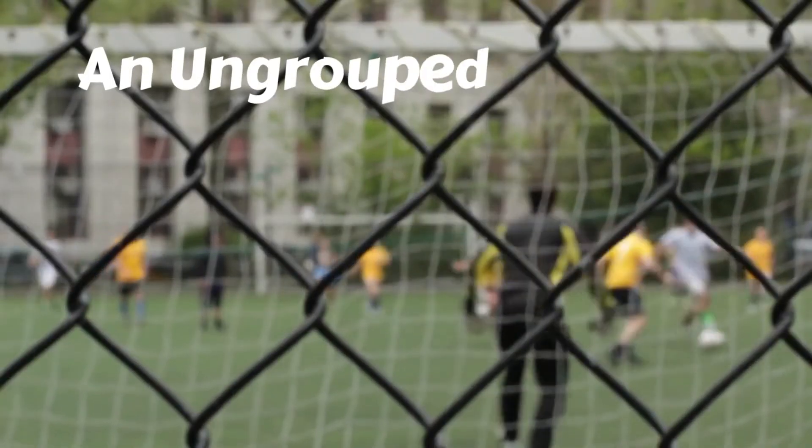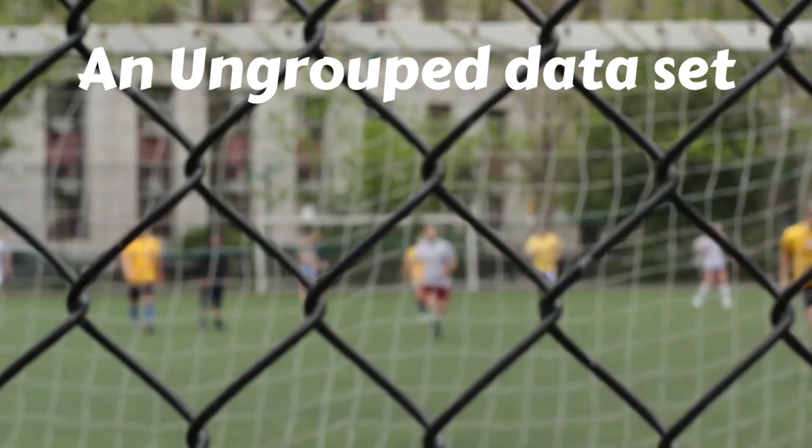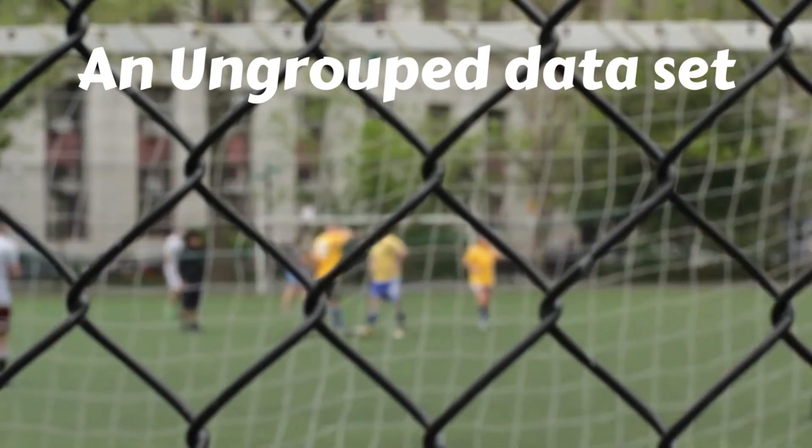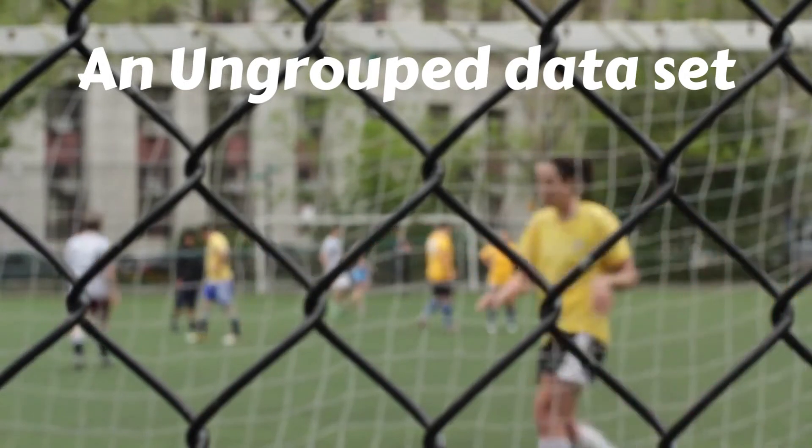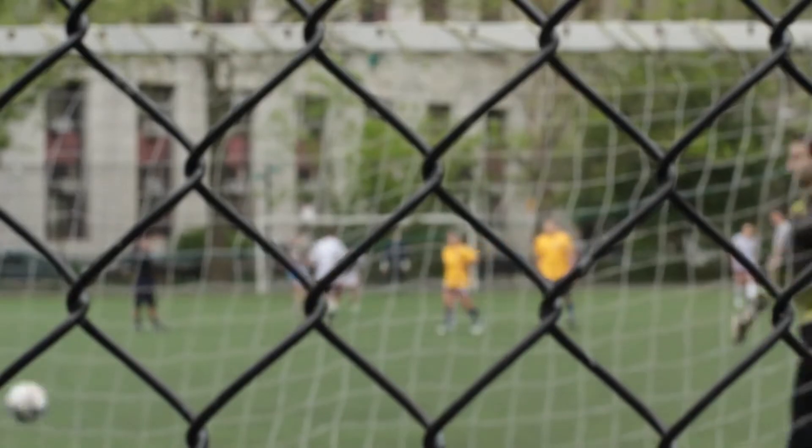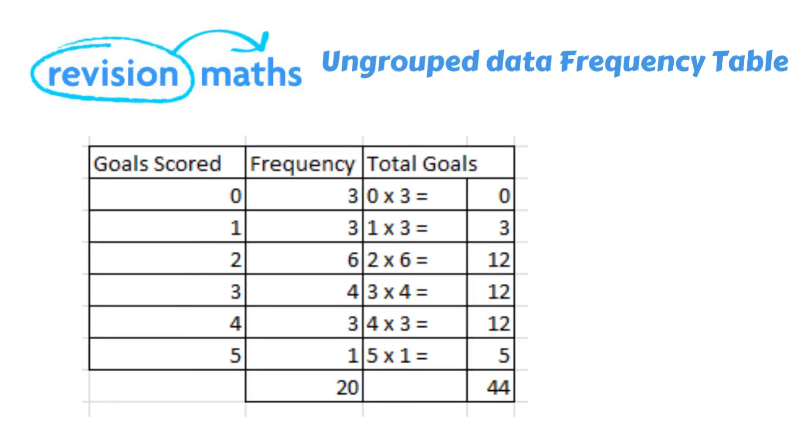So let's take this example of an ungrouped data set. A local football team played 20 games this season and wanted to find out the average number of goals scored per game. On the screen we can now see the frequency table showing the number of goals that they scored in column one and the number of games that matched this score line in column two which has been headed frequency.